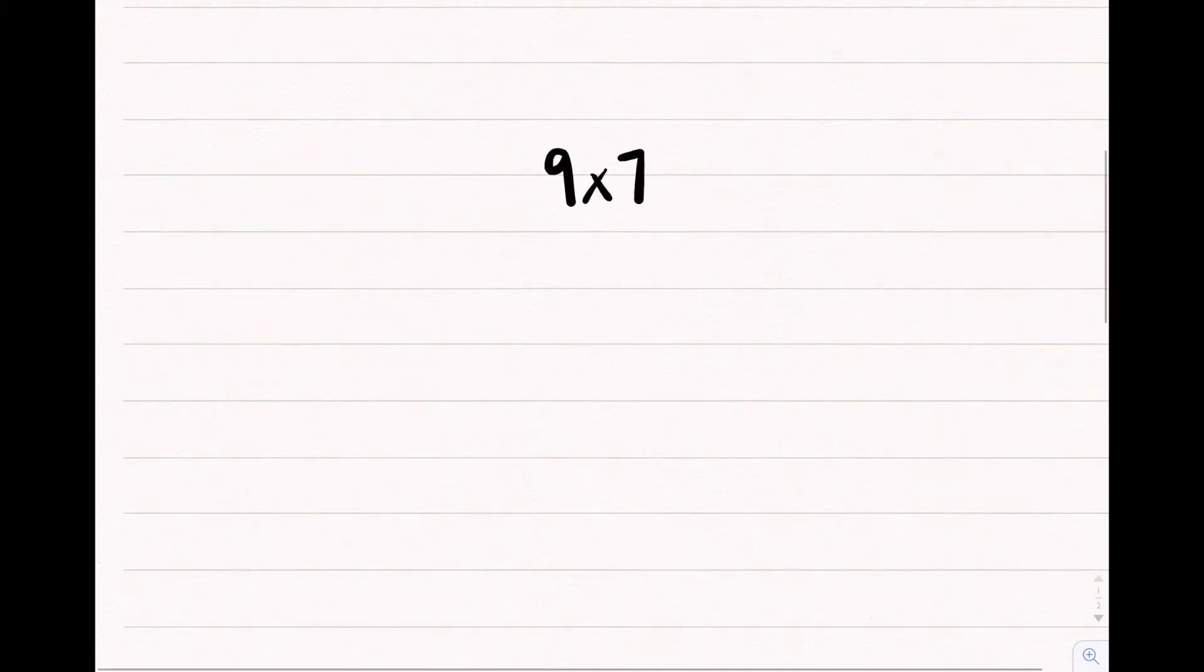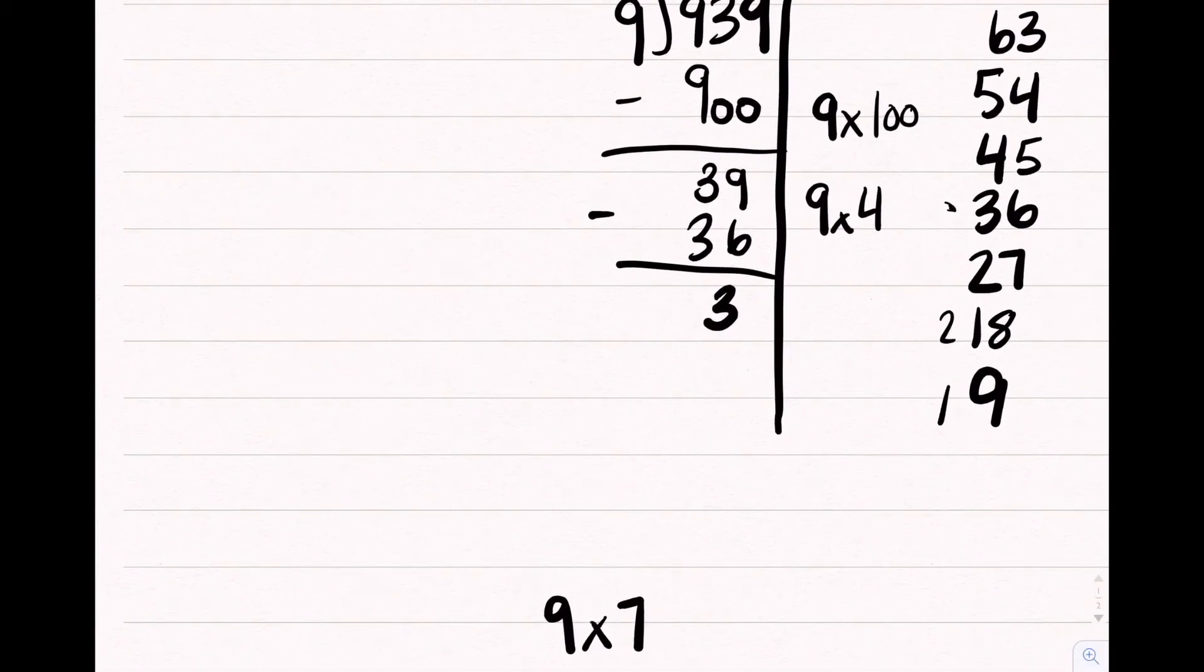The problem that we are going to do is 9 times 7. After that, count to 7 on the multiple tower, and that would get you to 63. And that is your answer.